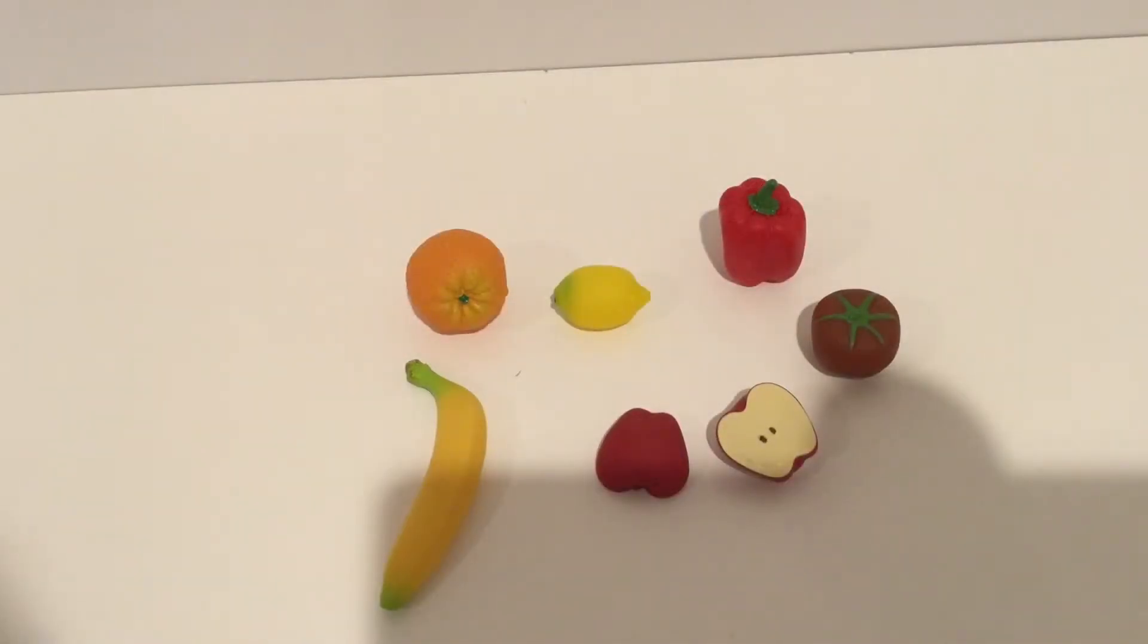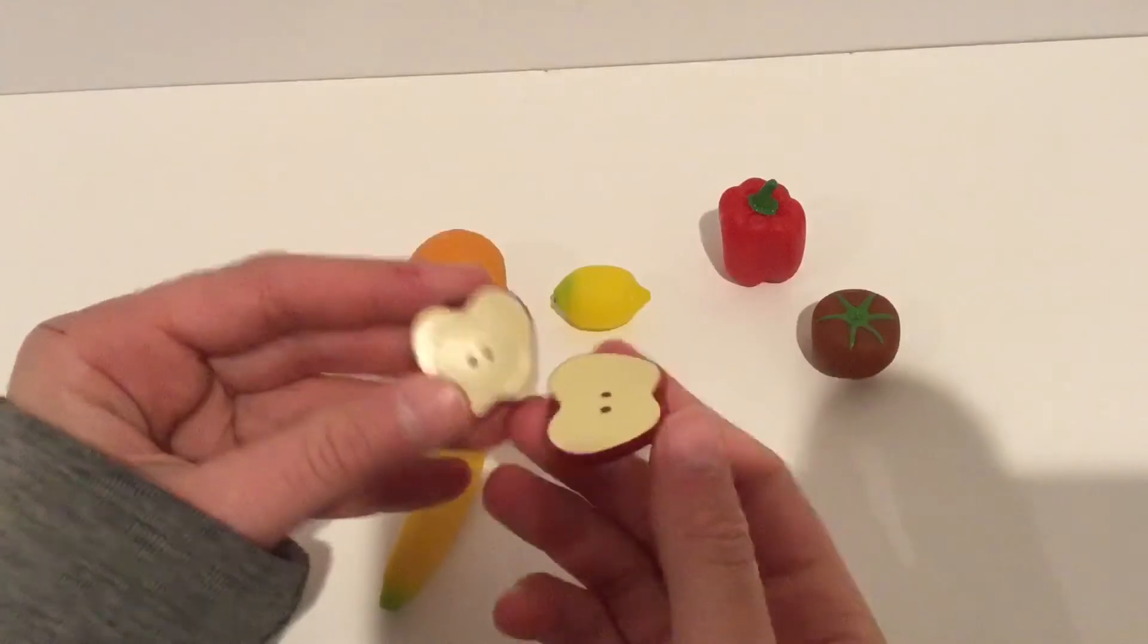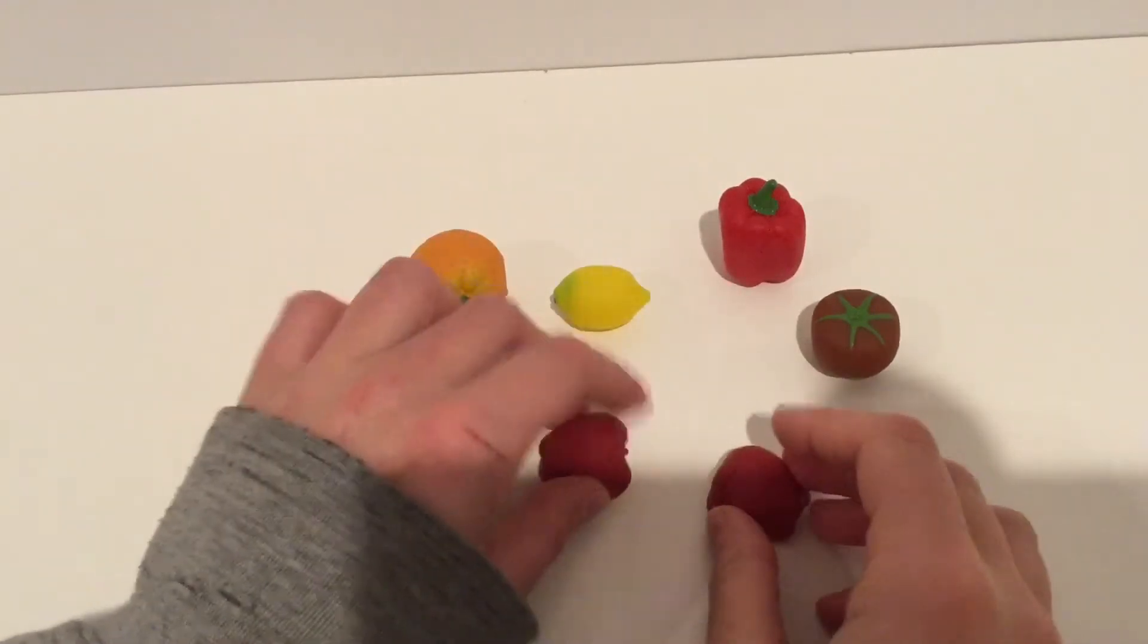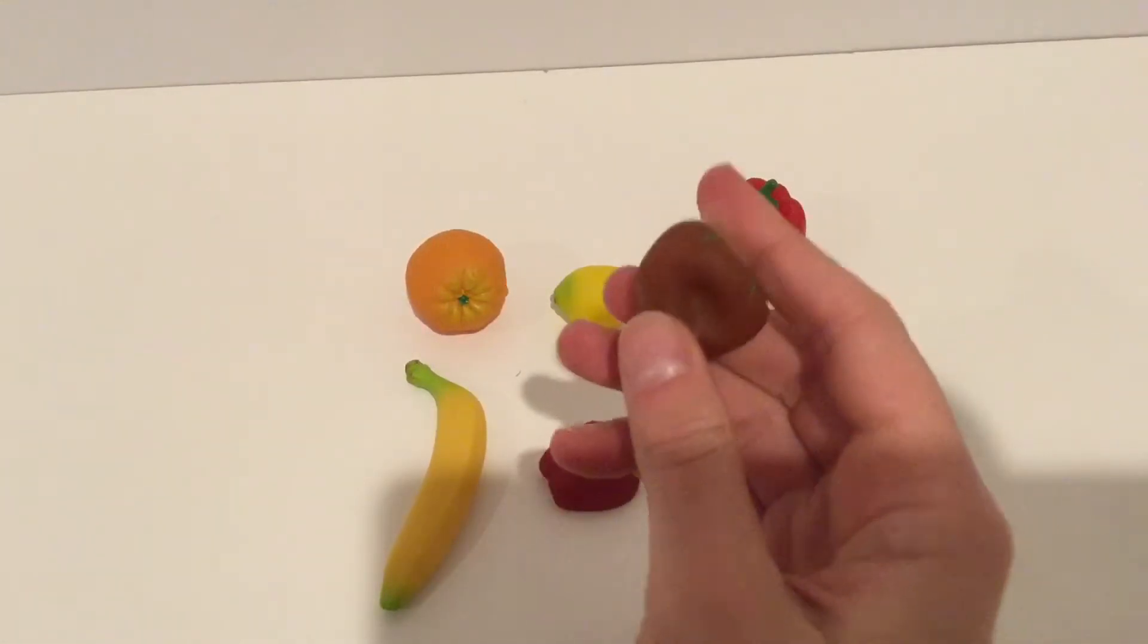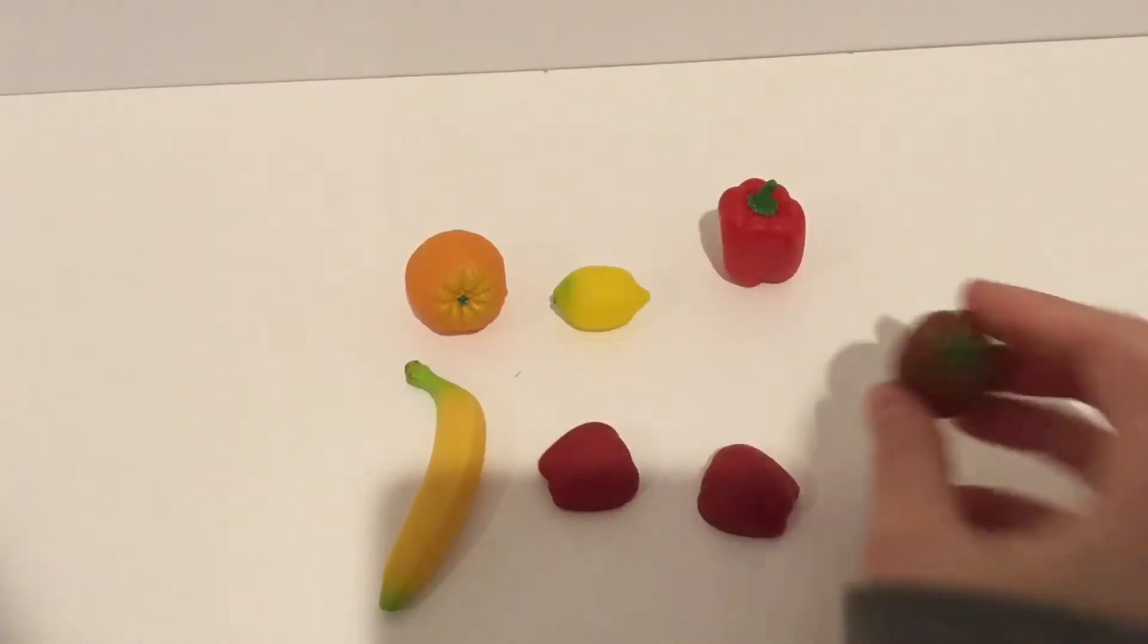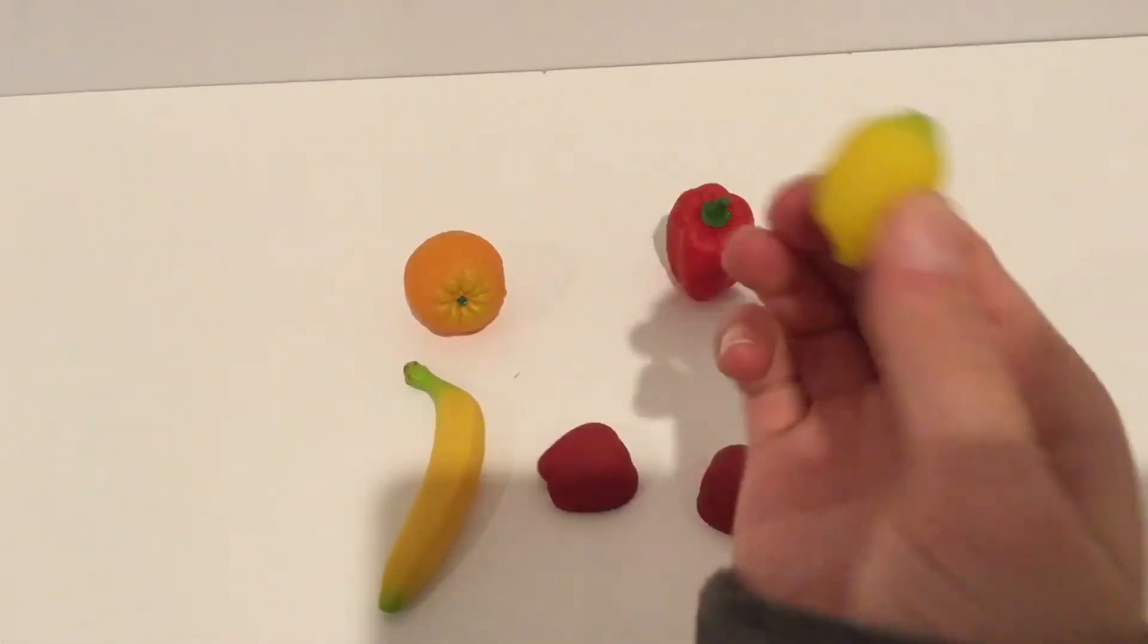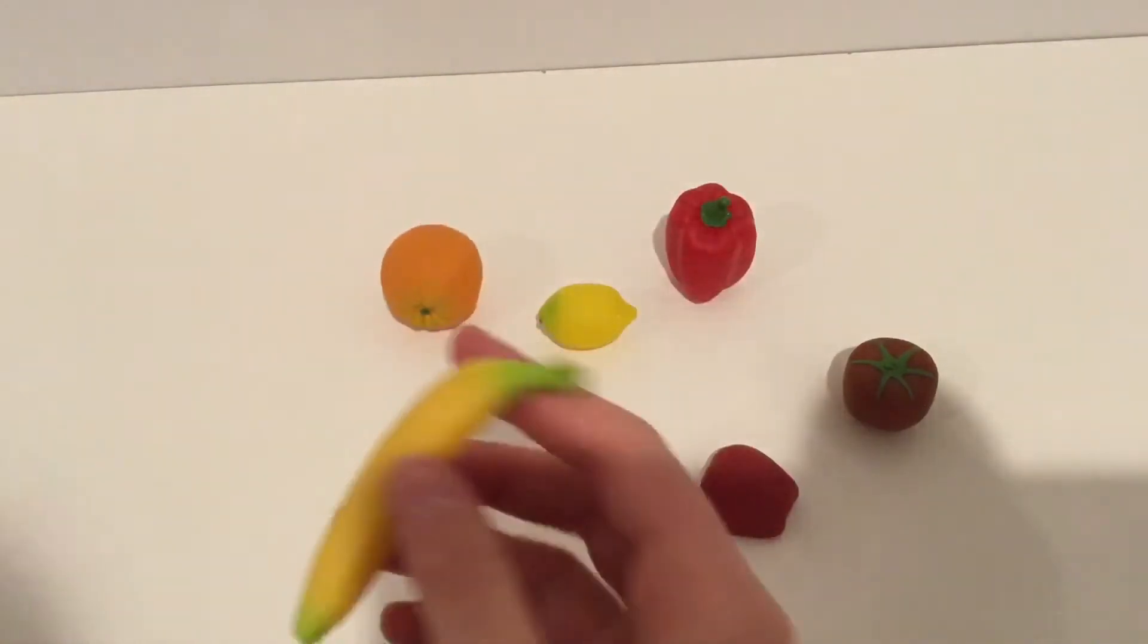Okay, so these are all the fruits and vegetables that came with the set. So first we have this apple, which is cut in half, which I think is so cute, it'd be great for cooking stop motions. And then we have this tomato, which all the fruits and vegetables are made out of this rubber stuff that's squishy. Then we have a red bell pepper, a lemon, an orange, and this banana.